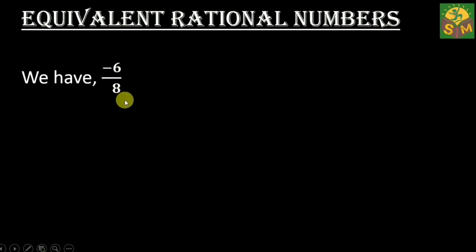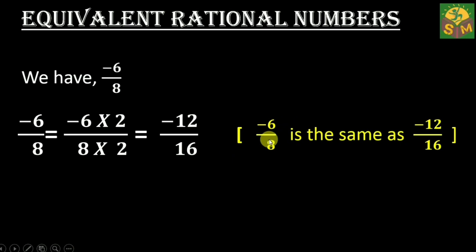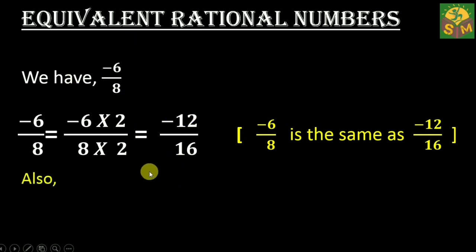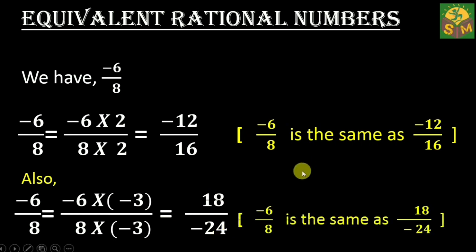Consider the rational number negative six over eight. If we multiply both the numerator and the denominator by a positive integer, two, we get another rational number: negative 12 over 16. We see that negative 6 over 8 is the same as negative 12 over 16. Next, if we multiply by a negative integer, negative 3, we get another rational number: 18 over negative 24. All three rational numbers are equal.